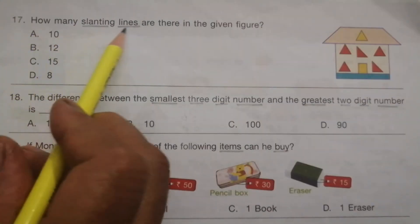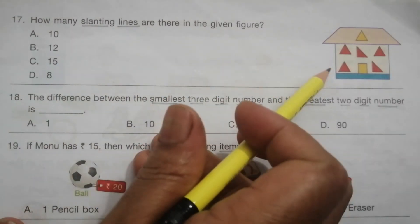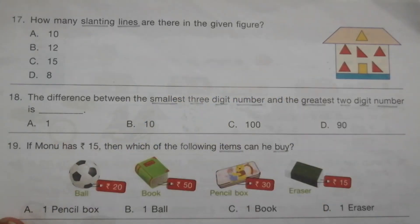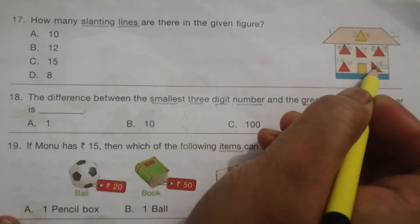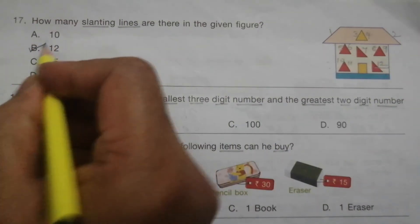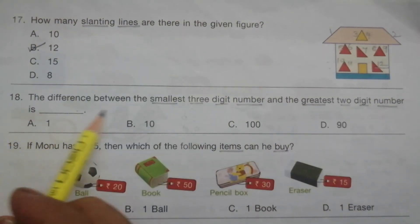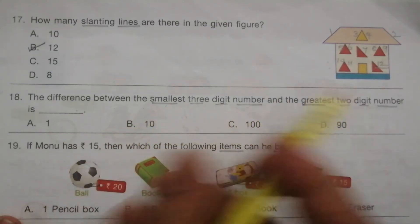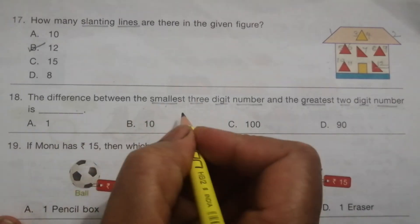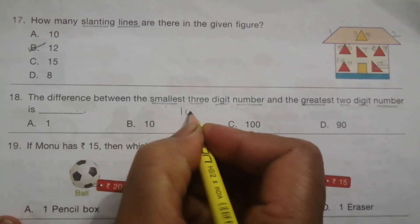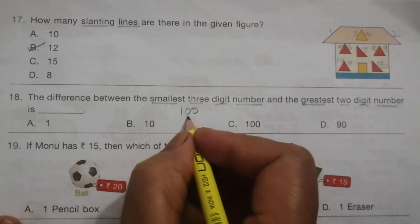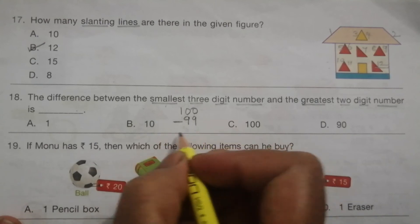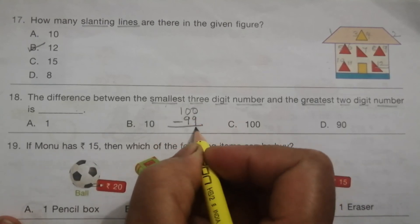Problem 17: How many slanting lines are there in the given figure? This is the given figure. We are going to count the slanting lines only. The number of slanting lines are 12. Answer is B, 12.